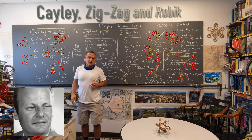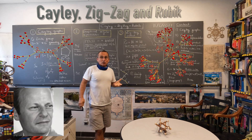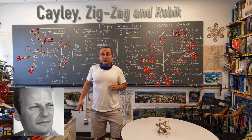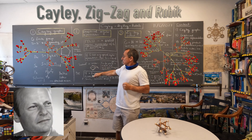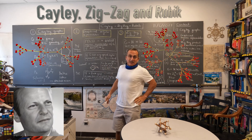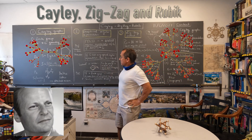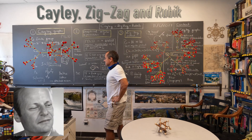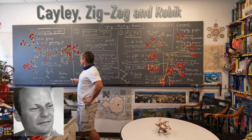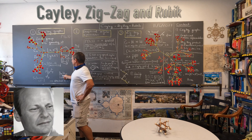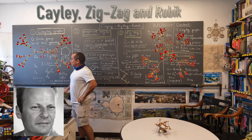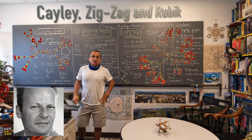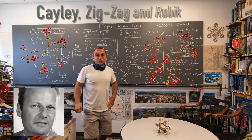Another interesting thing is the free group, which for even degree produces the Bethe lattice, which for finite graphs is called the Cayley tree.